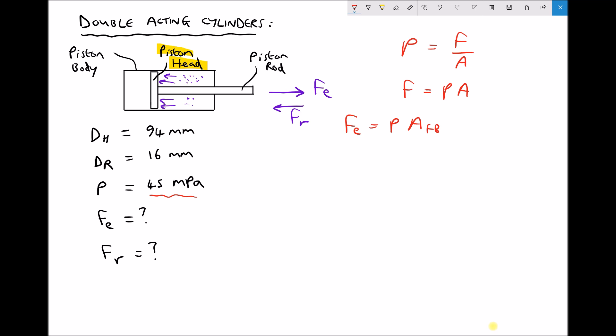The piston head is the part of the cylinder that makes contact with the piston body. So by full bore, we mean the full bore of the cylinder or the full area across the cylinder. We can rewrite our formula: the force on extension is the pressure, and our area is π times the radius squared—it's the radius of our piston head squared.